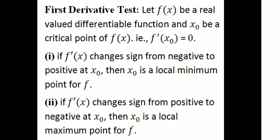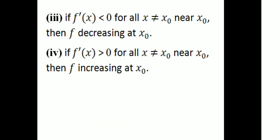Let f(x) be a real-valued differentiable function and x₀ be a critical point of f(x), so f'(x₀) = 0. If f'(x) changes sign from negative to positive at x₀, then x₀ is a local minimum point. If f'(x) changes sign from positive to negative at x₀, then x₀ is a local maximum point.